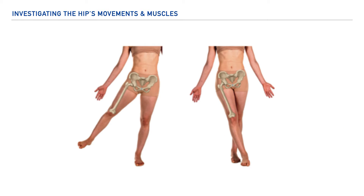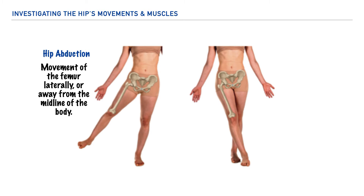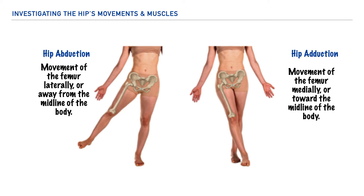Next up we have hip adduction, and we can describe this as movement of the femur laterally or away from the midline of the body. And for hip adduction we'd say that it is movement of the femur medially or toward the midline of the body.